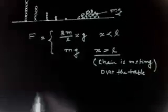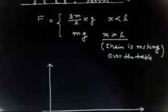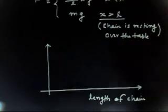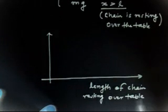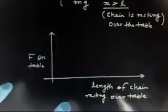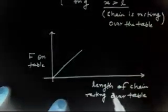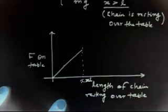We can plot a graph with length of chain resting over the table on the x-axis and force on the table on the y-axis. The force increases linearly as 3MgX/L while X is less than L. When X equals L, the force reaches a maximum of 3Mg. Just after that, when the whole chain has fallen, the force suddenly drops to Mg.